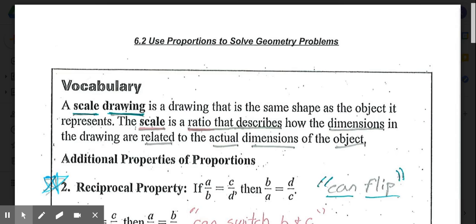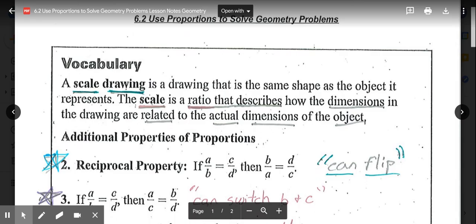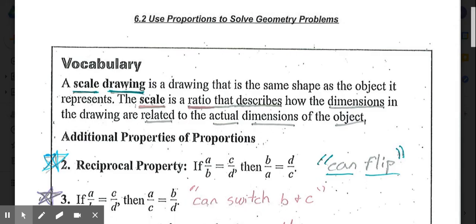To begin with, we're going to look at some vocabulary. A scale drawing is a drawing that is the same shape as the object it represents. The scale is a ratio that describes how the dimensions in the drawing are related to the actual dimensions of an object. If you think about the blueprints of a house, the blueprints are a scale drawing for the actual house, or a map. Maps have scales on them. A map is actually just a scale drawing of a geographical area.